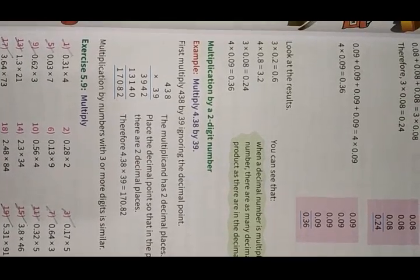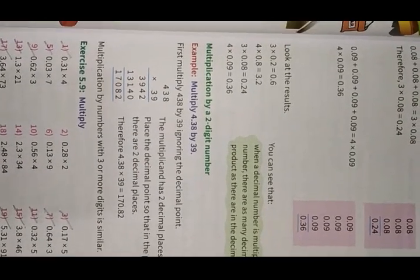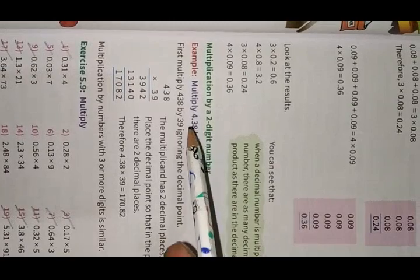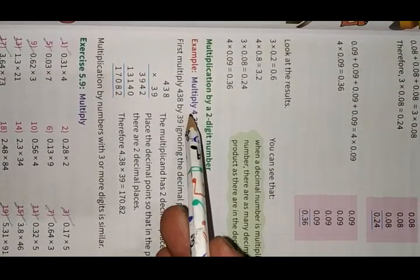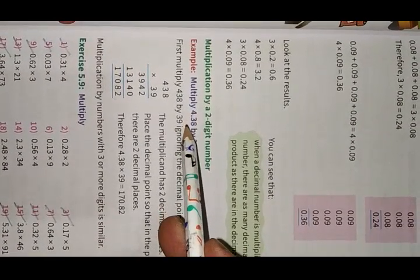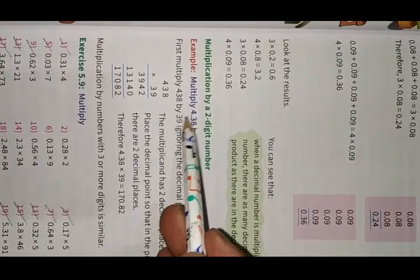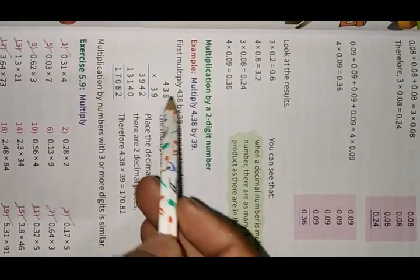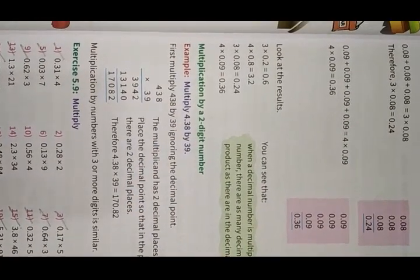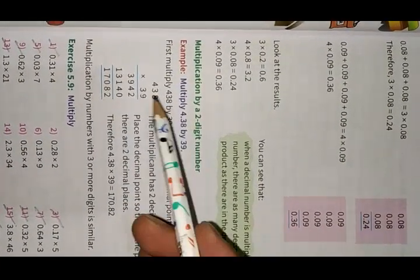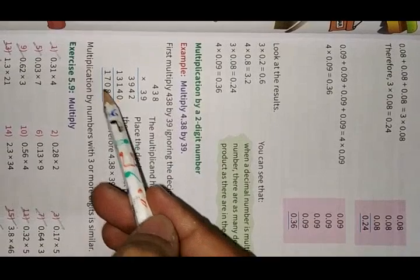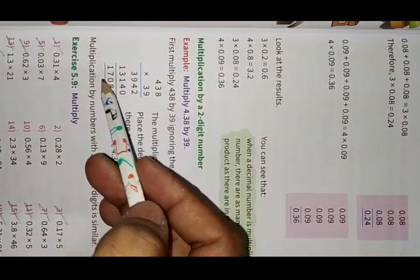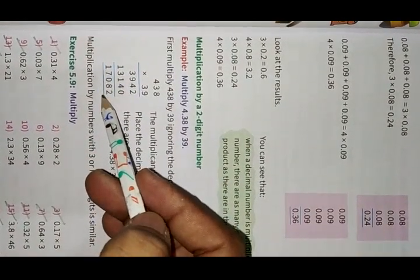Multiplication by Decimal Numbers. If we multiply any decimal number by any number, we have to multiply just the number after removing the decimal. For example, 4.38 multiplied by 39. After multiplying, the answer is 17082.